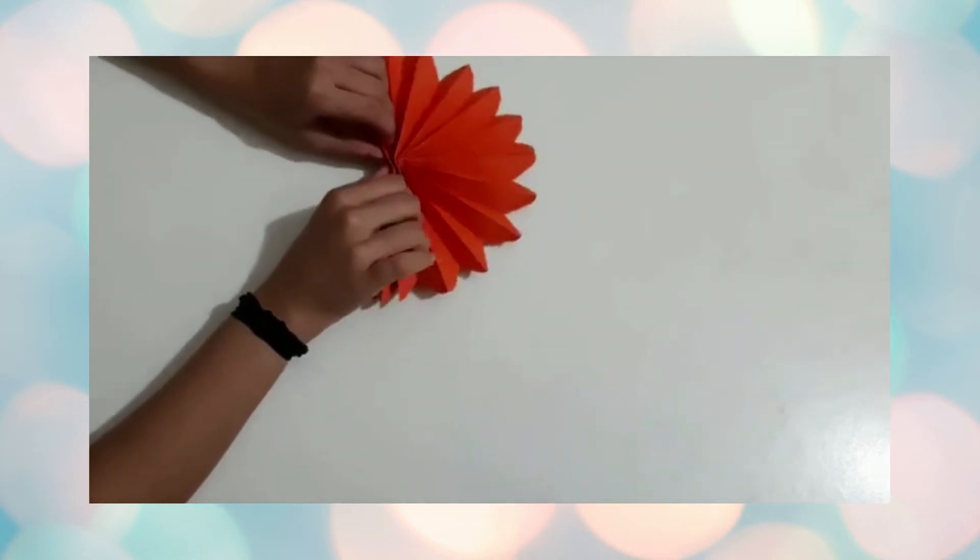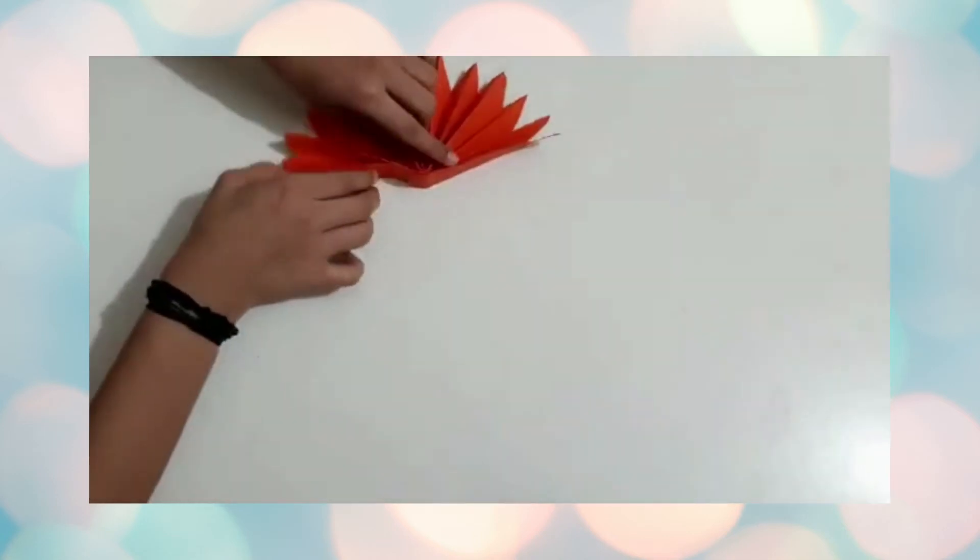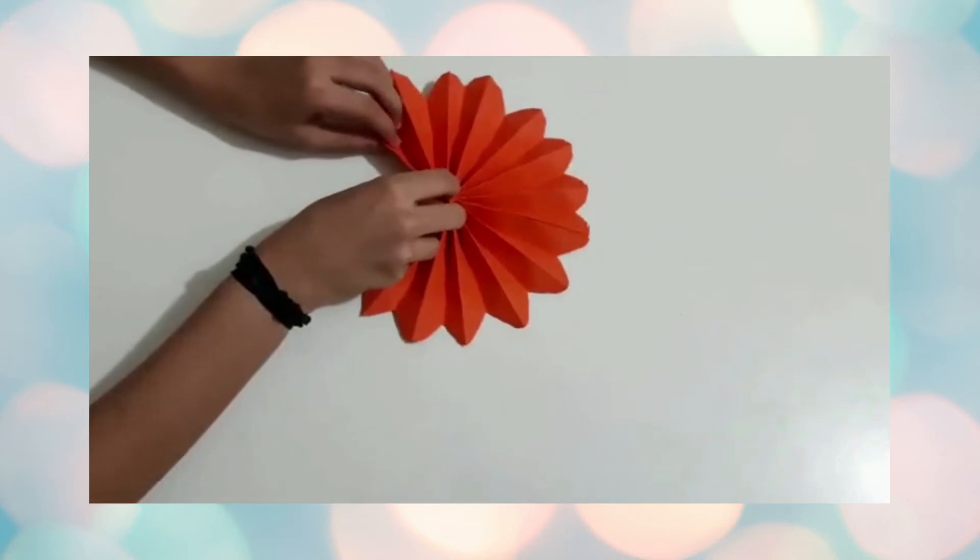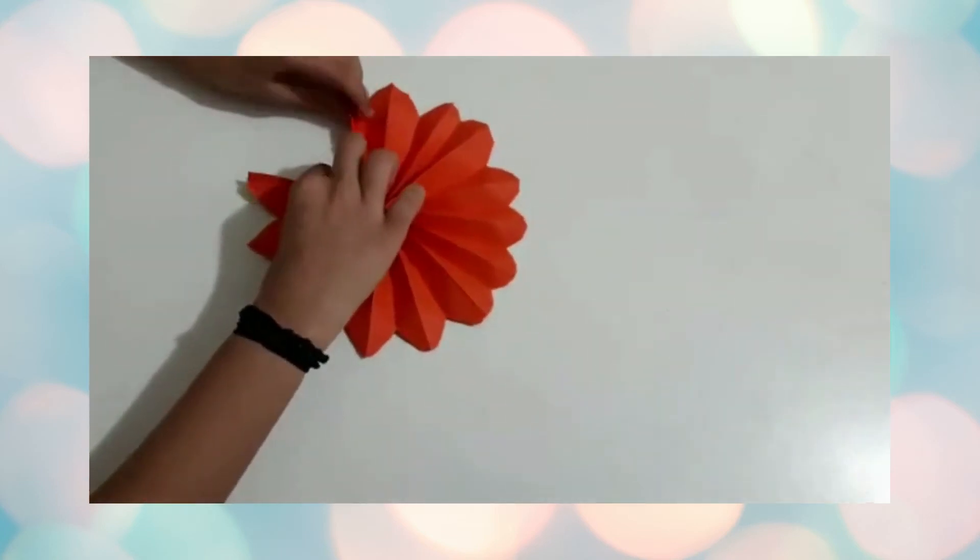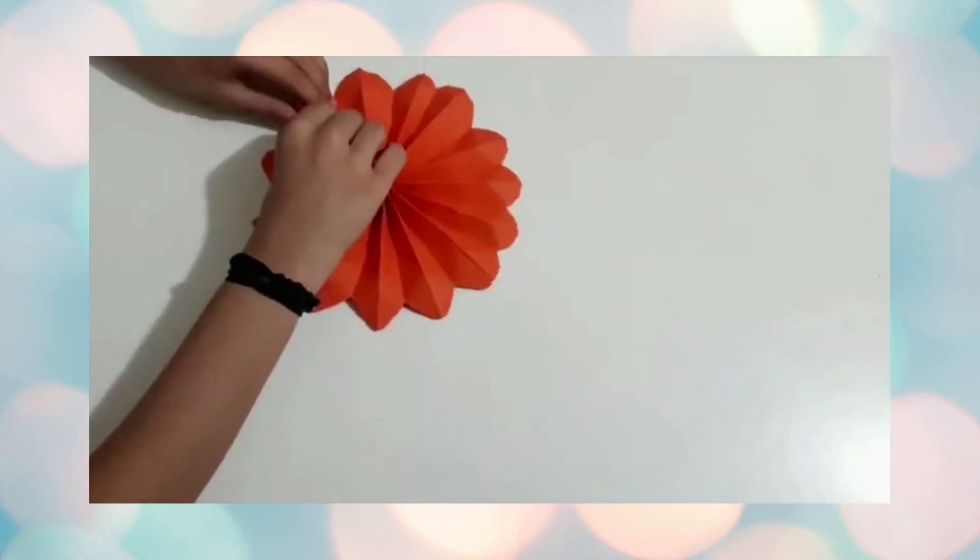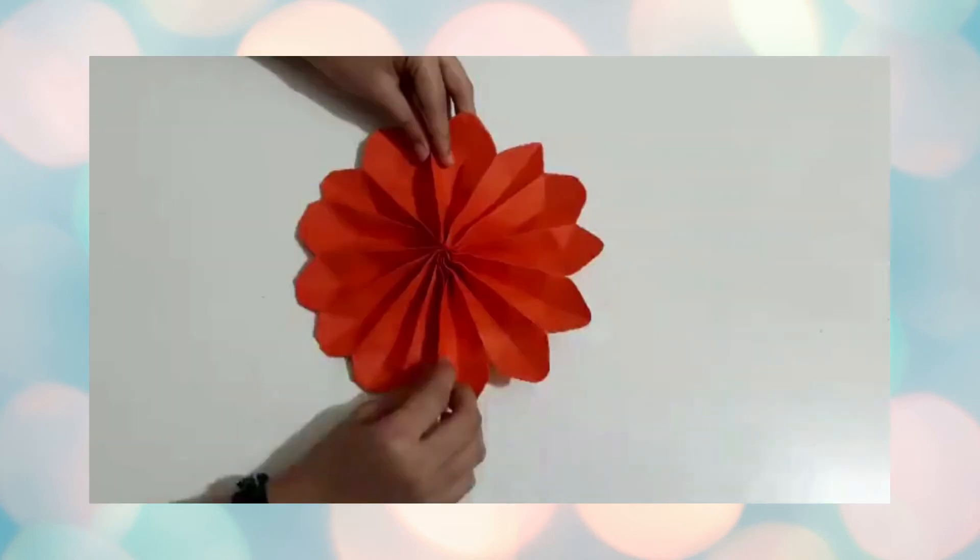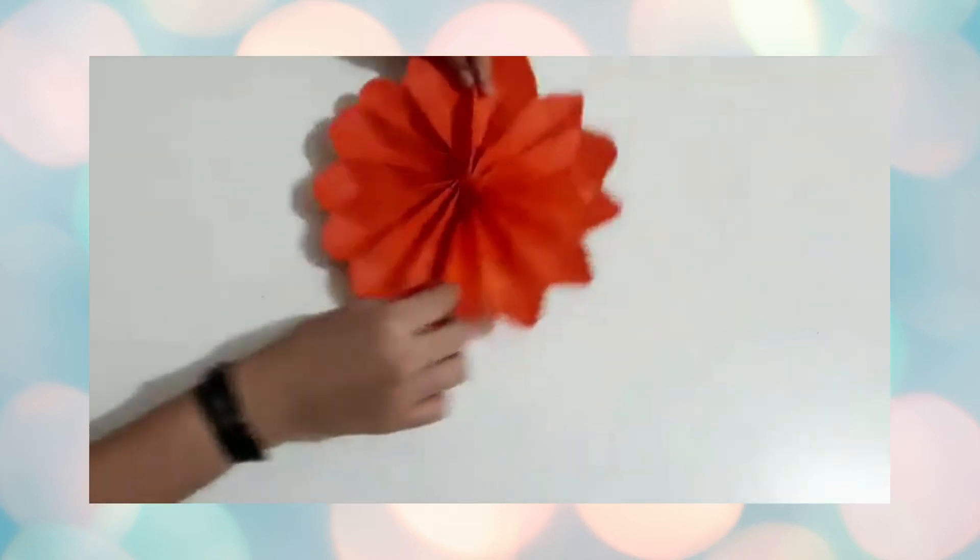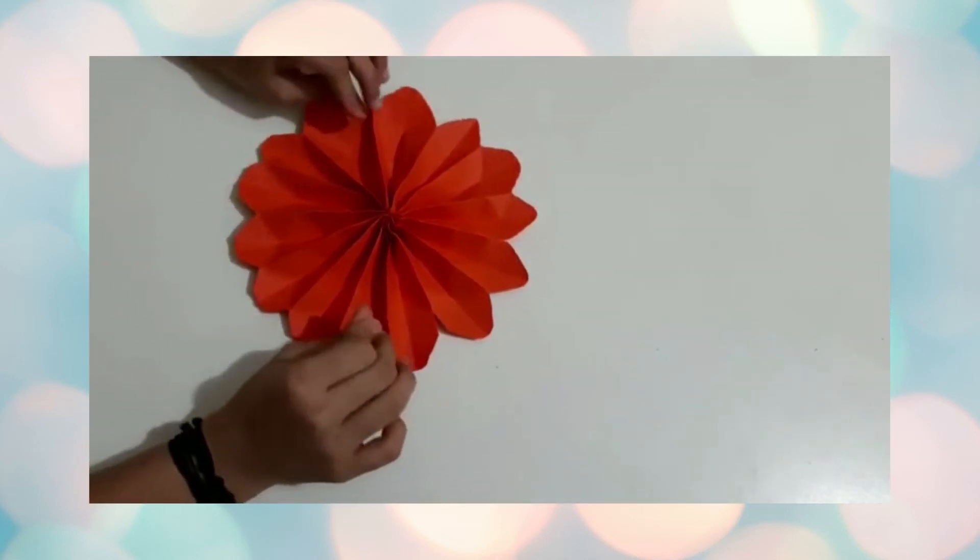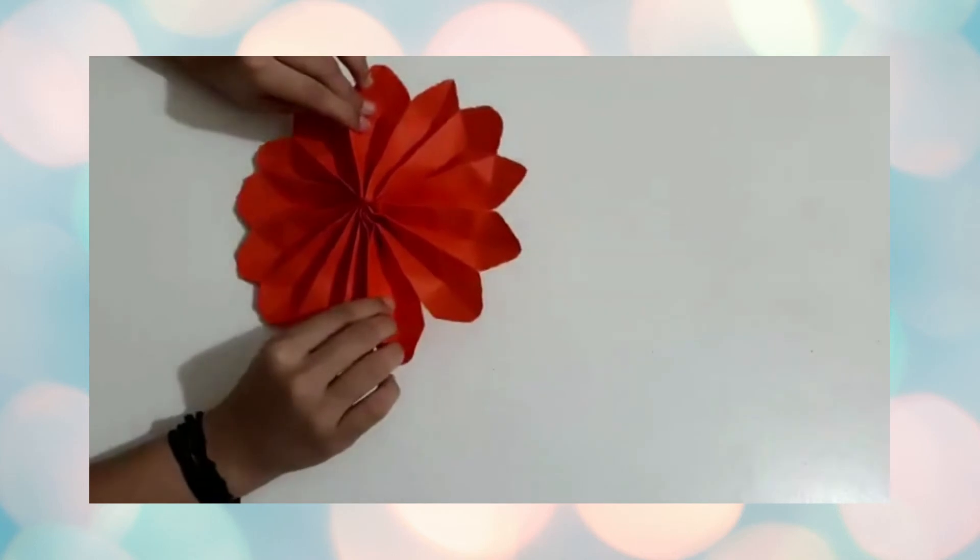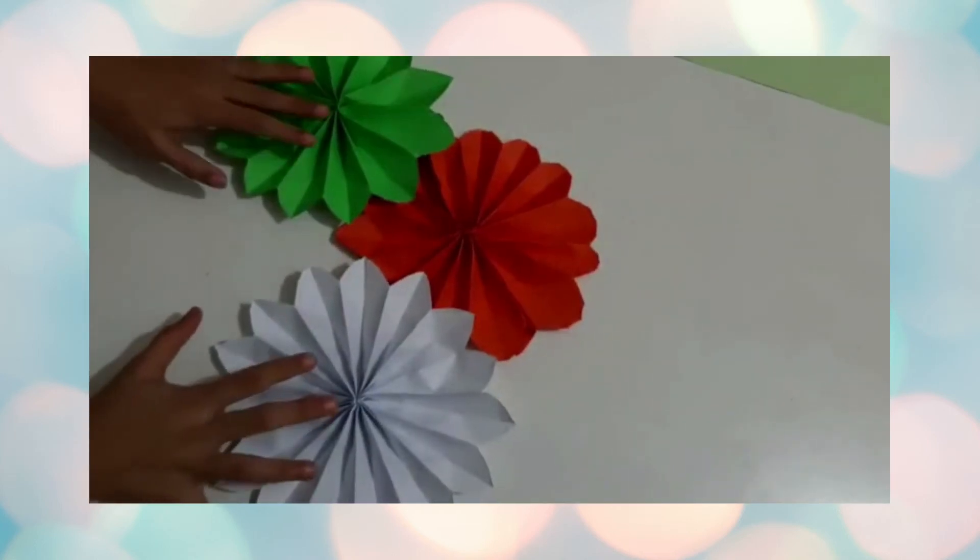Now, unfold and bring it all over. Now, apply glue on the surface as well, that is the outer surface. Now, bring it all the way up here and stick it. You get a flower like this. Do the same with the white colored paper and the dark green paper. Our flowers are ready.